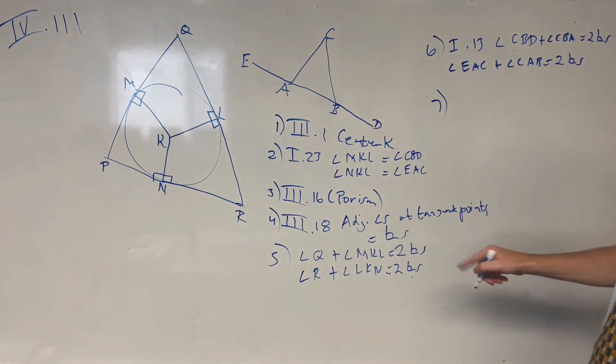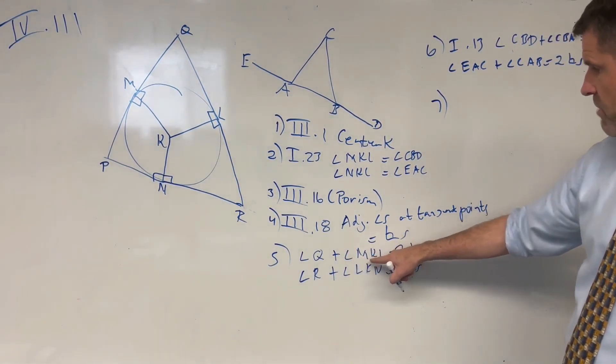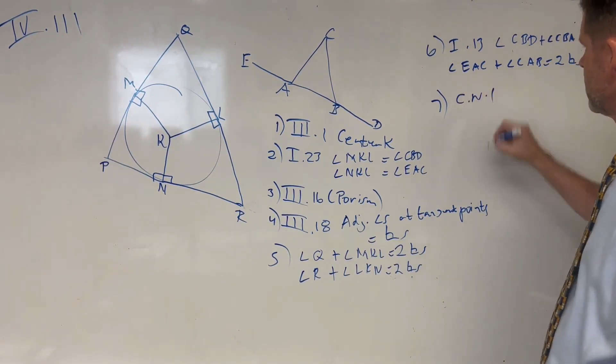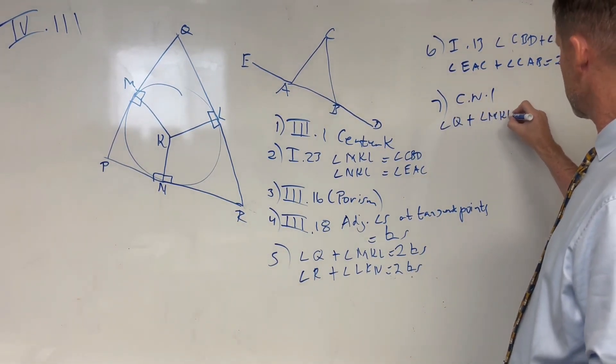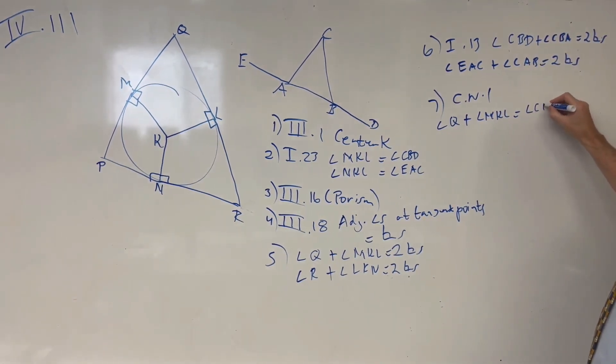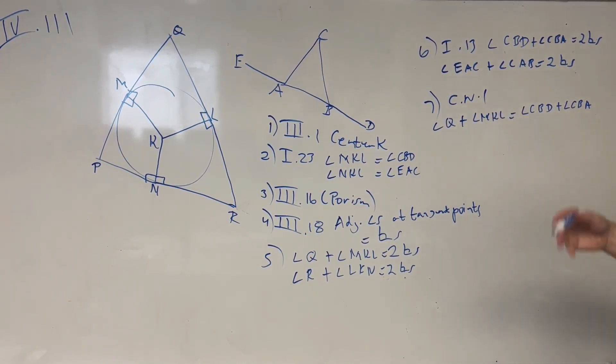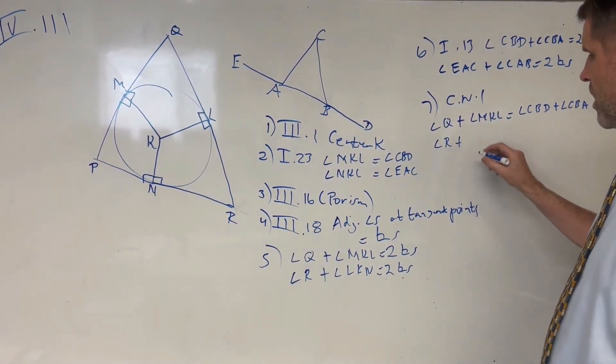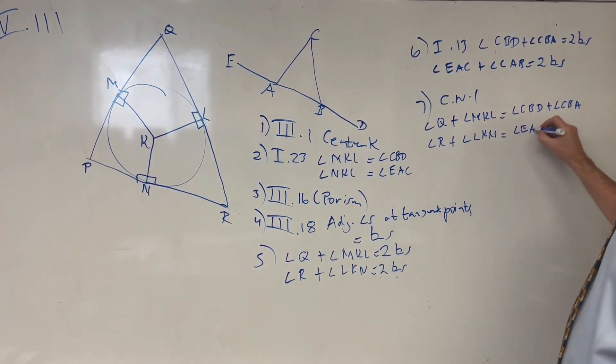And now we can apply common notion number one, using what we've got in both lines, in both steps five and six. So since we knew that the angle Q and angle MKL are equal to two right angles, and these two are equal to two right angles, we can say they're equal to each other by common notion number one. Things equal to the same thing are equal to each other. So angle Q plus angle MKL equal to the angles CBD plus the angle CBA. And then we can use second line in step six, common notion number one again, combine that with second line in step five, and we would know that angle R plus the angle LKN equal the angles EAC plus the angle CAB.